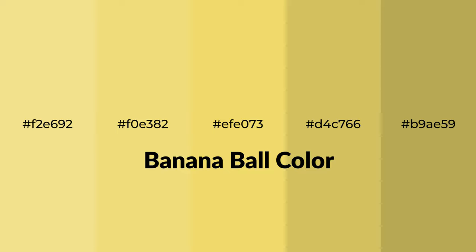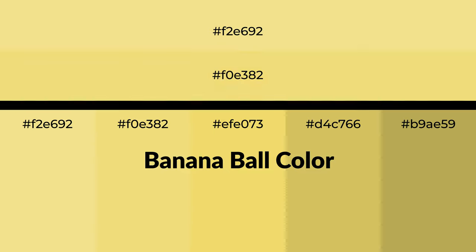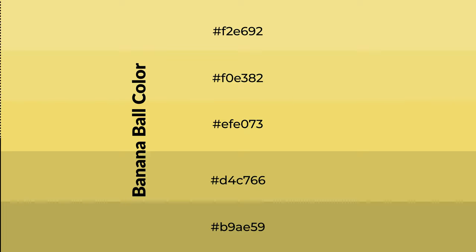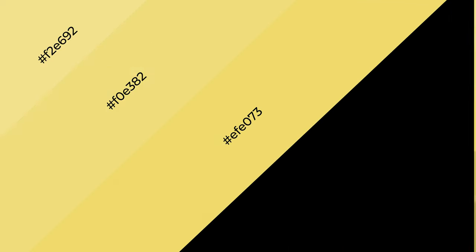Warm shades of banana ball color with yellow hue for your next project. To generate tints of a color, we add white to the color. Tints create light and exquisite emotions. To generate shades of a color, we add black to the color, and it is used in patterns, 3D effects, and layers. Shades create depth and drama.